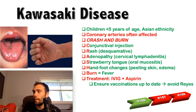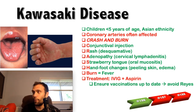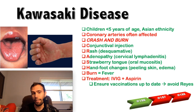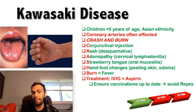Kawasaki disease is probably the most high yield of the five. Step 1 likes to place an emphasis on this disease, particularly because it's the leading cause of death from acquired heart disease in children. It typically affects children less than five years of age, and they often have Asian ethnicity — so in a question stem, you might see a young Asian child. Usually an infection triggers an autoimmune response in genetically predisposed individuals. Kawasaki disease is not contagious.